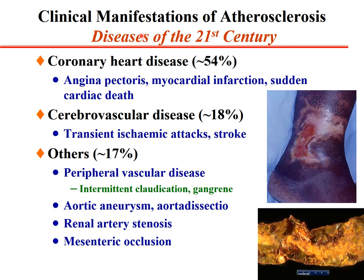Atherosclerosis is considered a disease of the 21st century. About 40 to 54% of atherosclerosis manifests as coronary heart disease — angina pectoris, myocardial infarction, or sudden cardiac death. About 18 to 70% can cause cerebrovascular diseases such as TIA or stroke. Peripheral vascular diseases can manifest as intermittent claudication, gangrene, aortic aneurysm, aortic dissection, renal artery stenosis, or mesenteric occlusion.